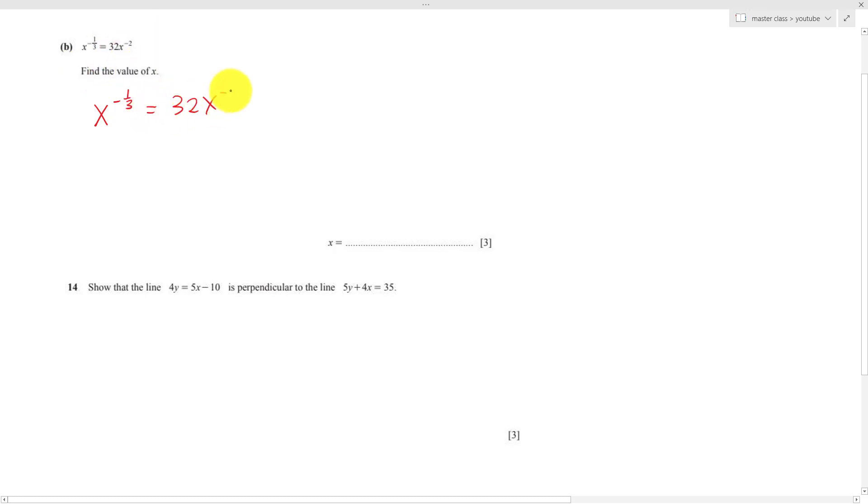If I want to eliminate the x power of negative 2 here, I will divide x power of negative 2 on both sides. Then here I can cancel out, leaving 32. We know the rule that xa over xb equals xa minus b. This is the indices law because divide basically means minus at the power. So this is x power of negative 1 over 3 minus negative 2 equals to 32.